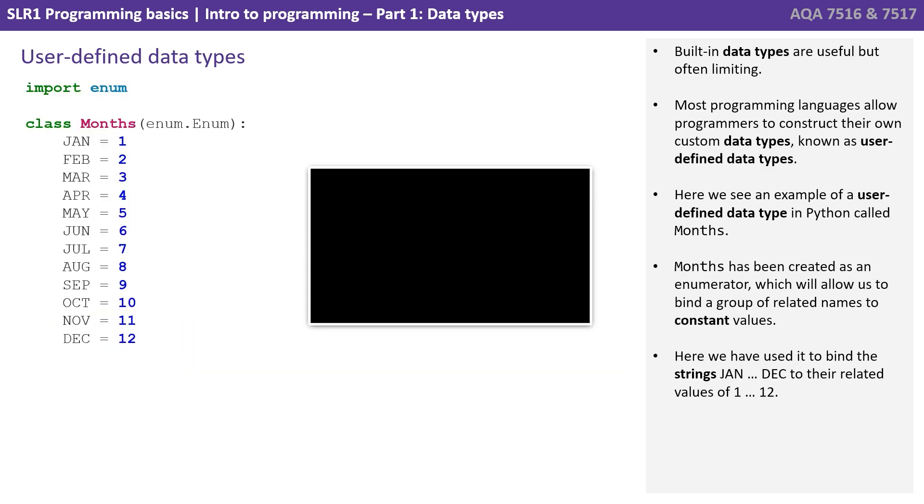And finally, let's look at user defined data types. So built in data types offered by languages are useful but often limiting. Most programming languages allow programmers to construct their own custom data types known as user defined data types. Here we see an example of a user defined data type in Python called months. Months has been created as an enumerator which will allow us to bind a group of related names to constant values. Here we have used it to bind the strings JAN to DEC to the related values 1 to 12.